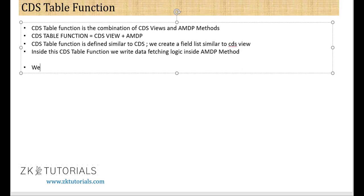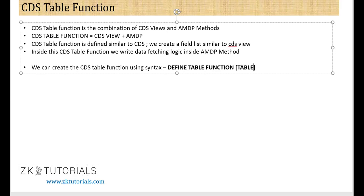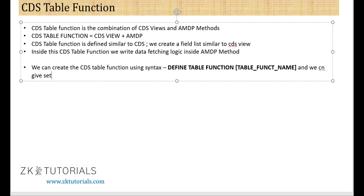How can we create this CDS table function? We can create it using the syntax: define table function, followed by the table function name. Inside this, we can give a set of input parameters — similar to CDS views with parameters — and we also specify the return fields.